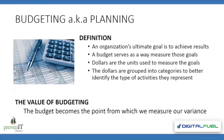An organization's ultimate goal is to achieve results. A budget serves as a way to measure those goals, and dollars are the typical units being used. When we budget, we tend to group those dollars into categories to give us some insight as to what type of activity they are — revenue, expense, profit, and subcategories like salary, travel, hardware, or software. The value of budgeting is that a budget gives us the point from which we begin to measure all of our variances.